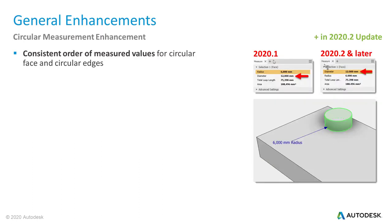We are nearly through Inventor's general enhancements and finish with the consistency update. Before the Inventor 2020.2 update, measured values of a circular edge displayed in a different order than the measured values of a circular face. If you now select a circular face or a circular edge, you get the same order: diameter, radius, total loop length, and area displayed.